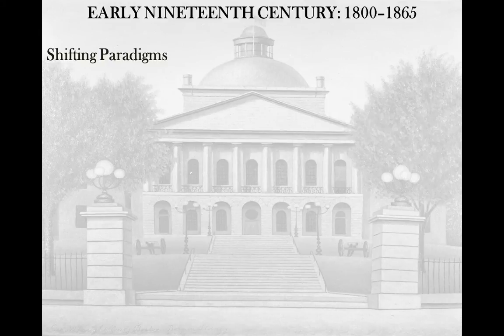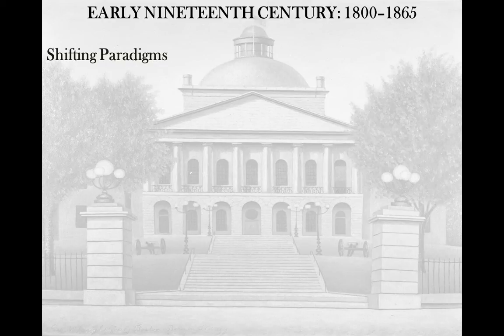One of the things we have to see within the early 19th century is there are a lot of shifting paradigms. By the time we get to the early 1800s, the United States has formed itself as a nation and has been able to survive for a generation. The people that fought in the American Revolution, the founding fathers, are slowly dying off, and we're starting to see the new generations — the generations after the war — trying to reconcile: what are we?